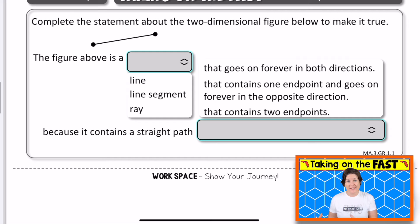This problem is an editing task problem. And so what we have to do is complete the statement about the two-dimensional figure below to make it true. So this is the two-dimensional figure. I noticed what looks like a straight line with two endpoints. That's what I'm seeing. So when I do this, it says the figure above is, and I would click this right here to drop down my answer choices.